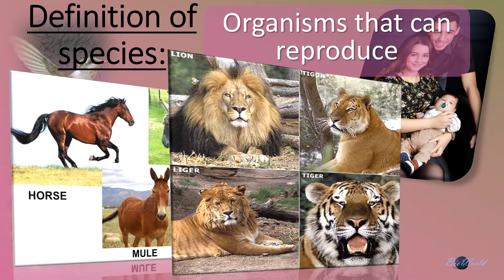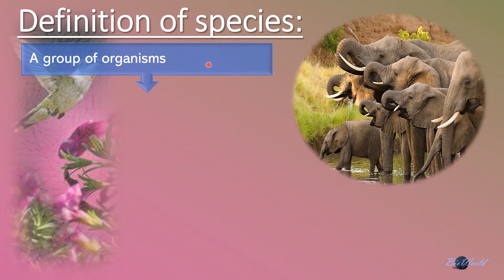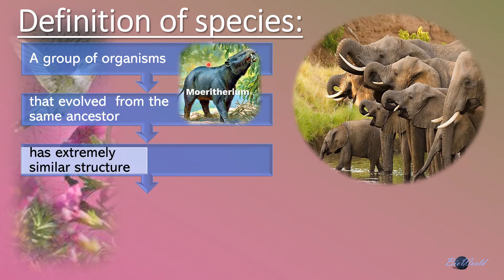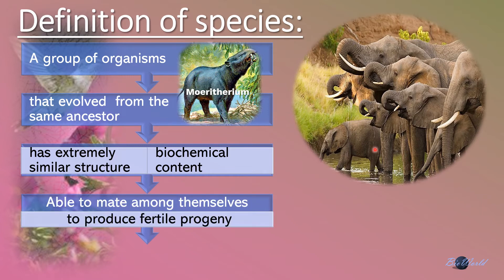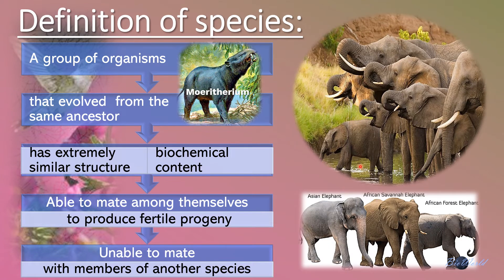So, what is the best definition for species? Species is best defined as a group of organisms that evolved from the same ancestor, have extremely similar structures as well as biochemical content, are able to mate among themselves to produce fertile progeny — progeny referring to the offspring — and the organisms should be unable to mate with members of another species. For example, this group of African savannah elephants all originated from the ancestor called the Moeritherium, which is extinct today, and will not be able to mate with the Asian elephant nor the African forest elephant because they are of different species.